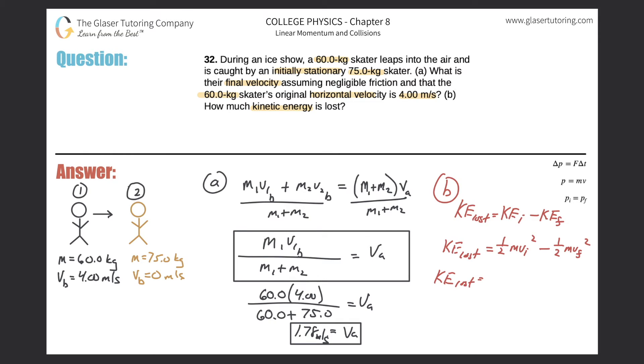So kinetic energy lost would be equal to 1 half m1 vi squared minus m1 plus m2 vf squared. Okay, that sounds like a good formula now.